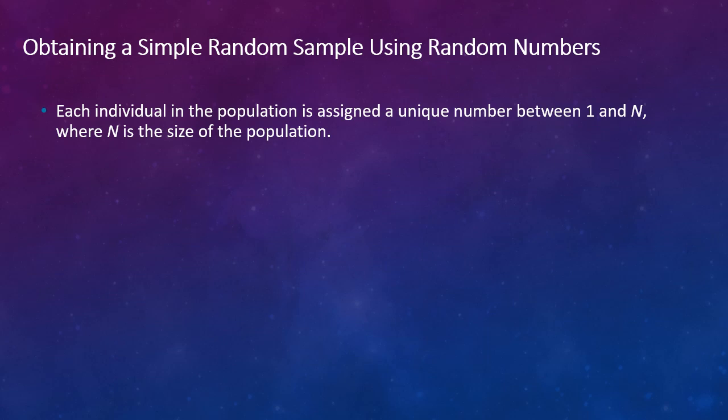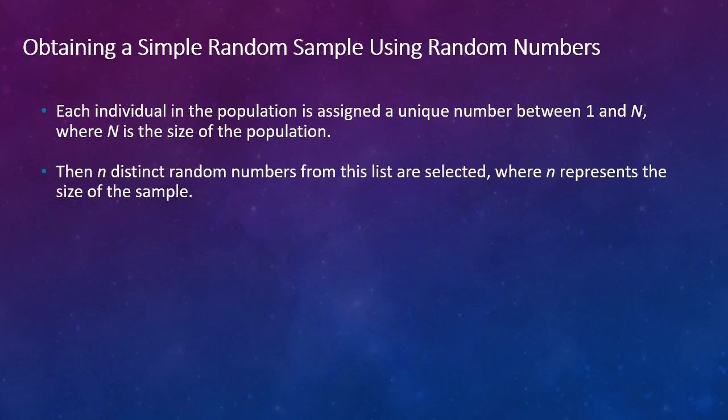Sometimes we use random numbers when we're trying to create a simple random sample to try to avoid any kind of maybe unconscious bias, or sometimes with larger groups, etc. And the way that we do this is that each individual in the population is assigned a unique number between 1 and N, where N is of course the size of the population. Then lowercase n distinct random numbers from this list are selected, where n represents the size of the sample.